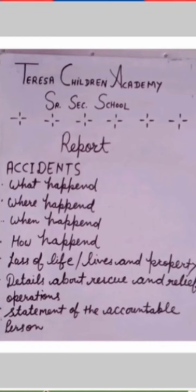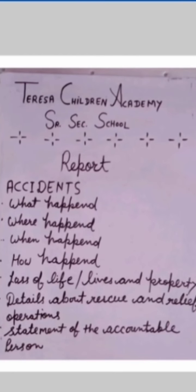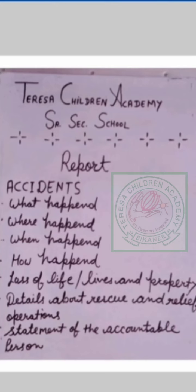Today we will discuss a report on an event or a report on an accident. First we will see a report on an accident. There are some points we should use whenever we make a report: first, what happened; second, where it happened; when it happened; how it happened; loss of life and property; details about rescue and relief operations; statement of the accountable person; and warning, reminder, comment, or appeal on what needs to be done.